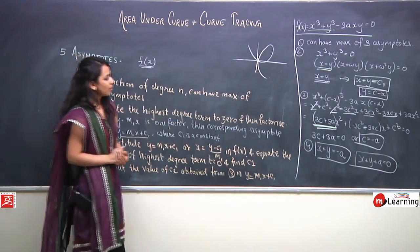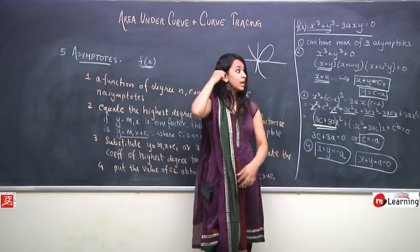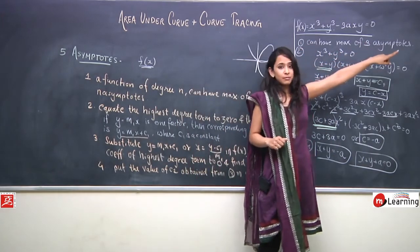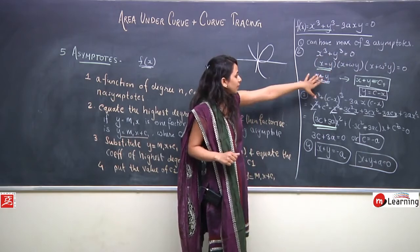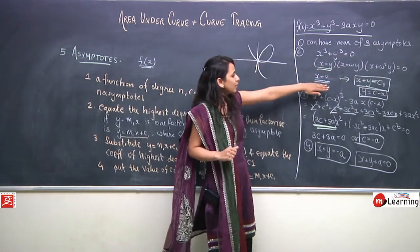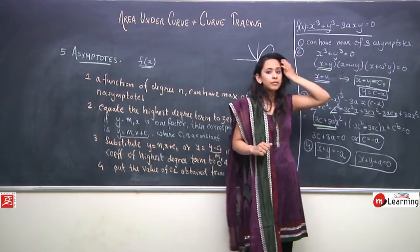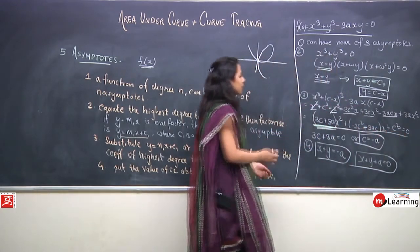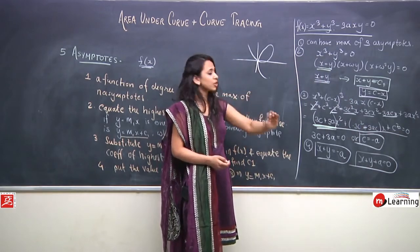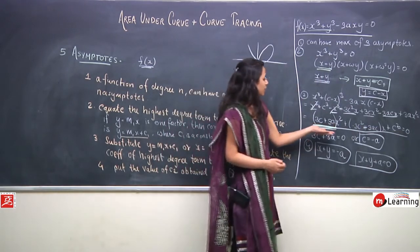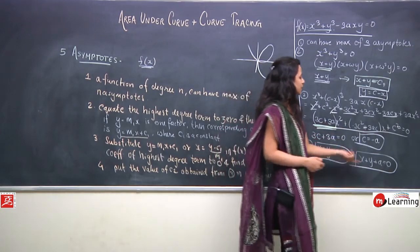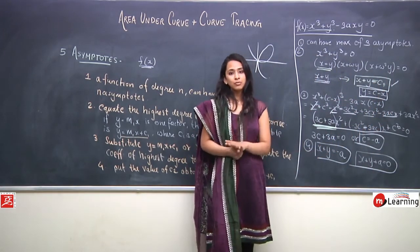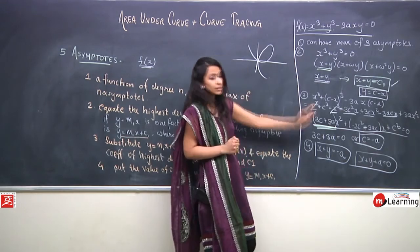So the asymptote for the curve x³ + y³ - 3axy = 0 is x + y + a = 0. To recap the steps: identify maximum asymptotes from degree; equate highest degree term to 0 and factorize; substitute into equation and equate coefficient of highest degree term to 0 to find c₁; substitute back to get the asymptote.